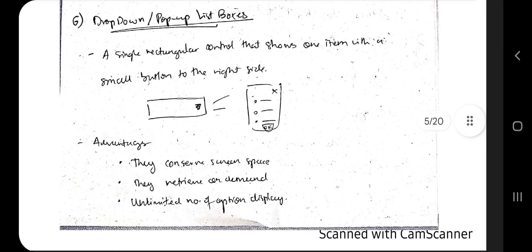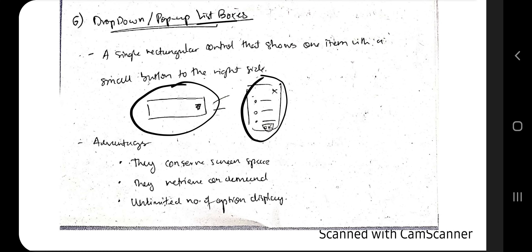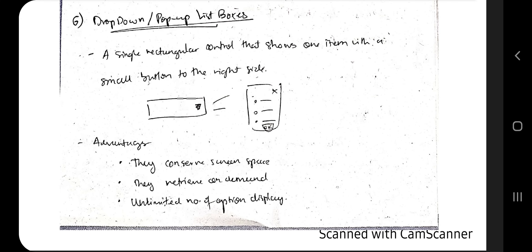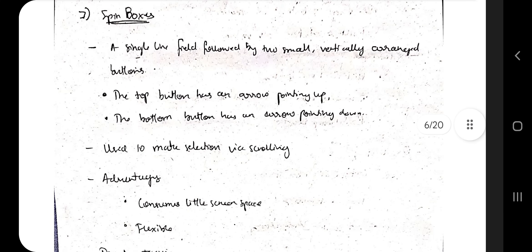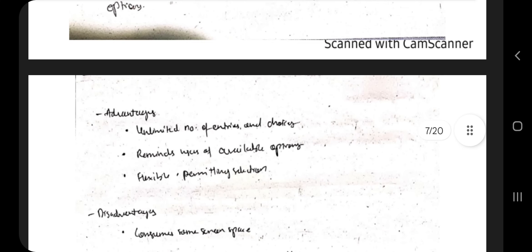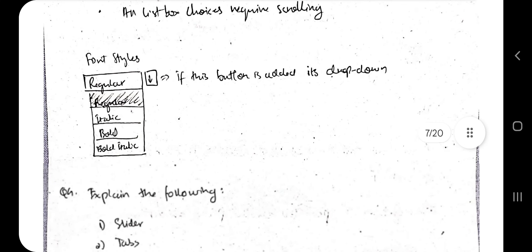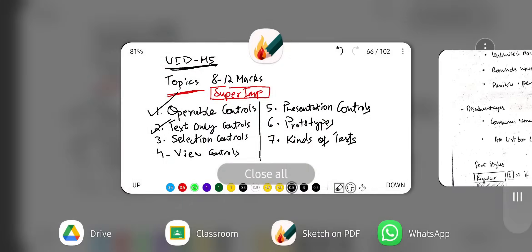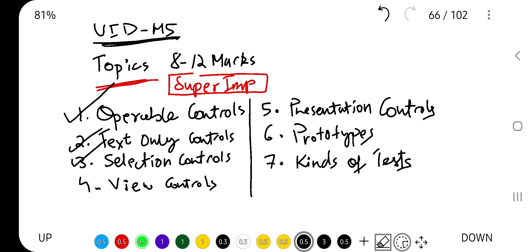Drop-down or pop-up list boxes are a single rectangular control that shows one item with a small button to the right side. Spin boxes let you scroll values up or down with text and numeric values. Combo boxes are like list boxes but include a drop-down menu requiring scrolling to navigate between items. That covers all the selection controls.